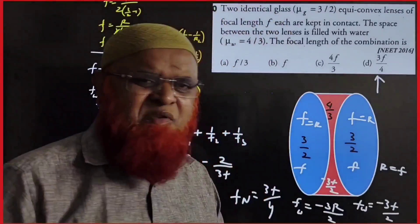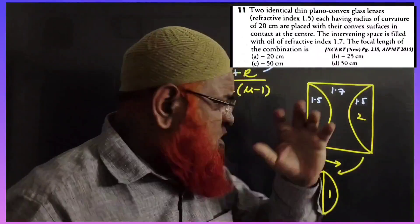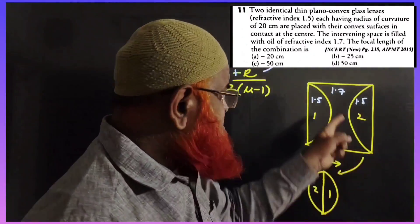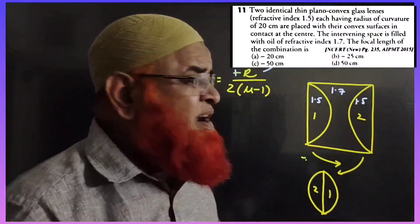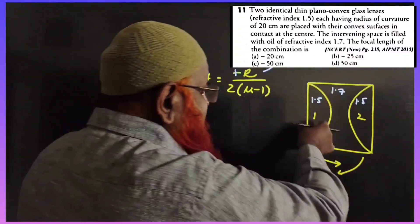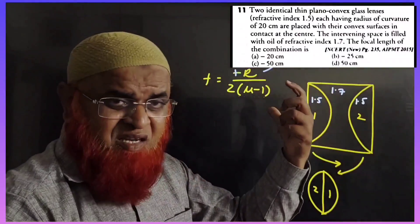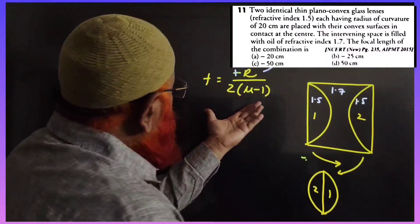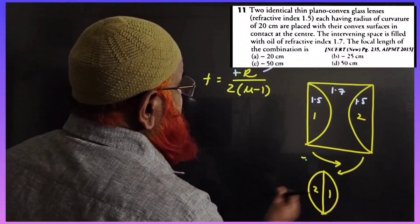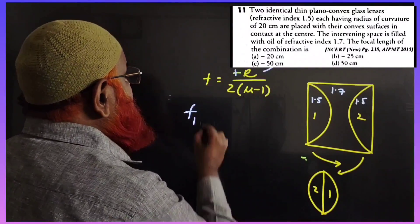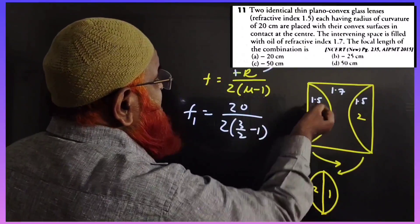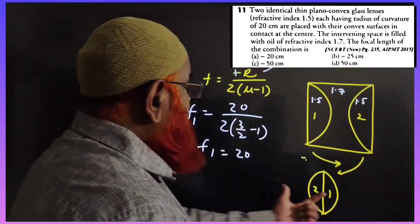Now a second problem: two plano-convex lenses made of glass with refractive index 1.5 (= 3/2) and a liquid of refractive index 1.7 in between. I club the two plano-convex lenses to form a single convex lens. Using f = R / (2(μ − 1)) with R = 20: f₁ = 20 / (2 × 1/2) = 20 cm.